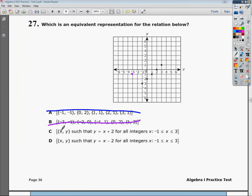Now I'm going to look at what it actually says for C and D. C and D say X and Y such that Y equals X plus 2 or Y equals X minus 2 for all integers negative 1 to 3.